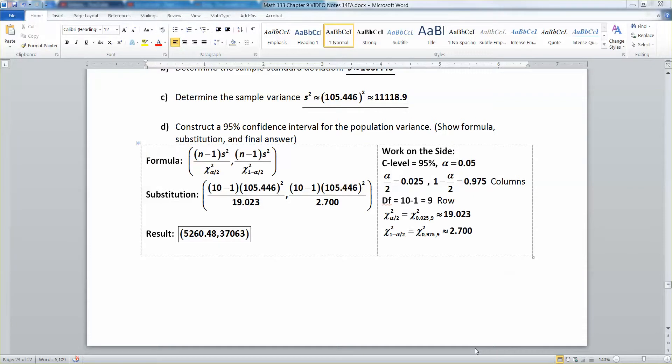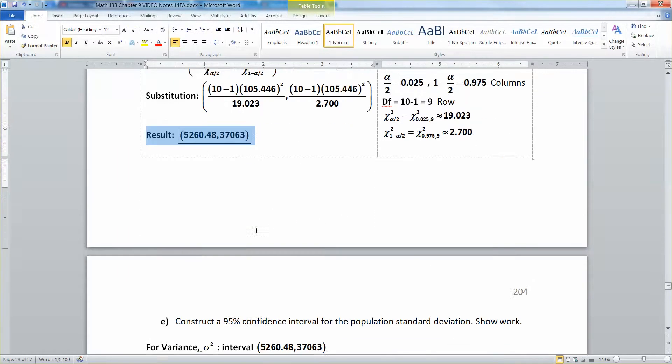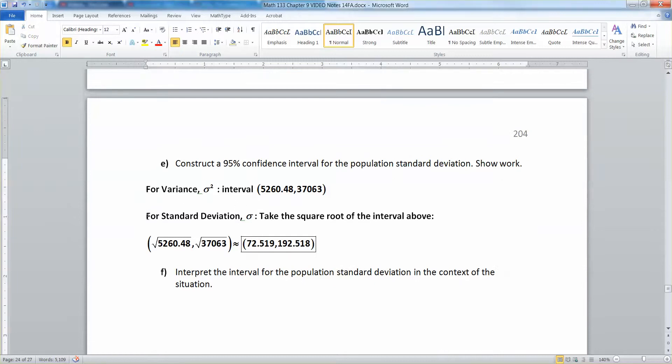In our last video we learned how to find the confidence interval for population variance by hand, showing all the steps. Then we took the square root of the numbers for the population variance to get the standard deviation. You take the square root of both numbers and there you have it.